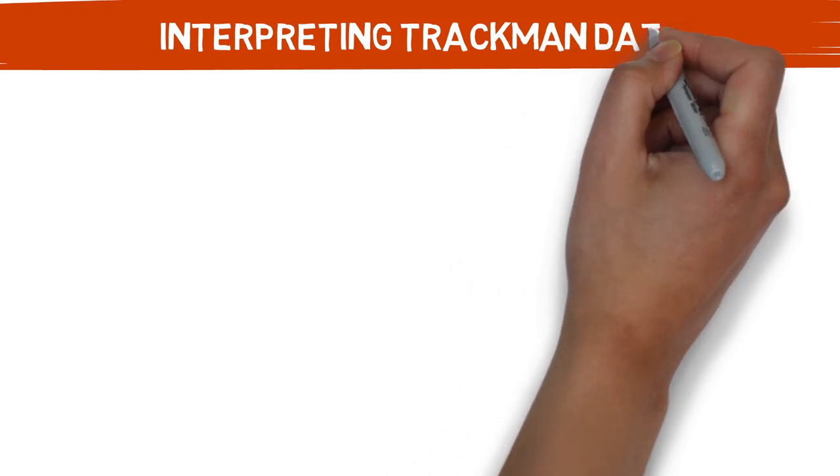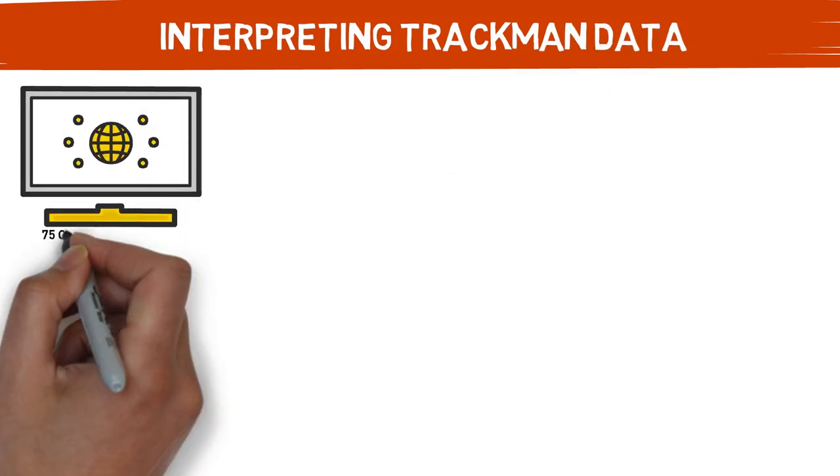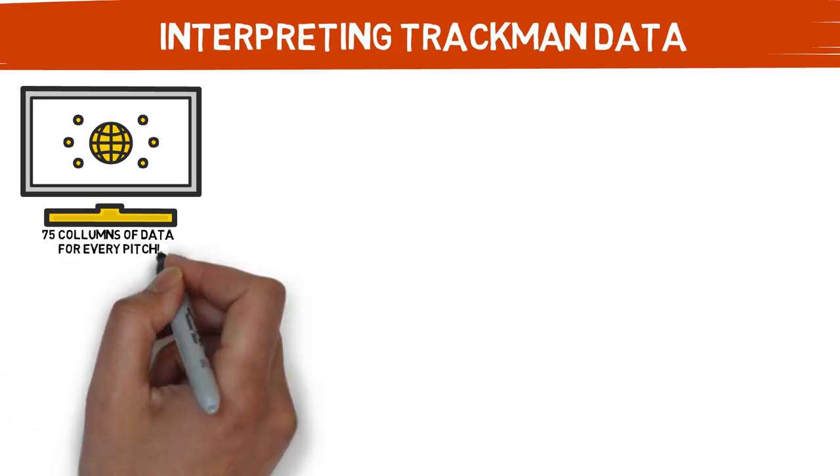We've talked about TrackMan data a ton on this channel, but we don't often get super technical on how to break it down. For every single pitch, TrackMan spits out 75 columns worth of data, which is incredible. But what are you supposed to do next?